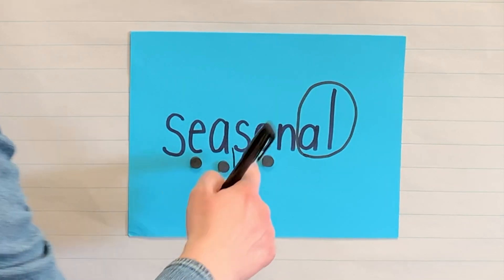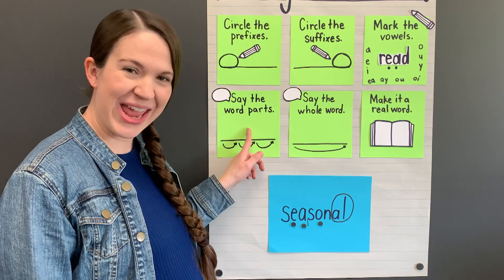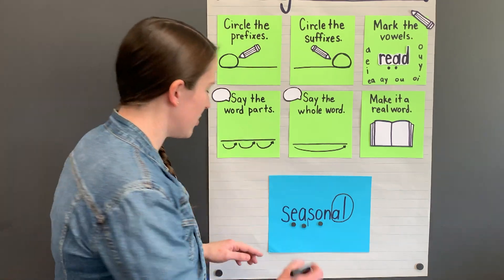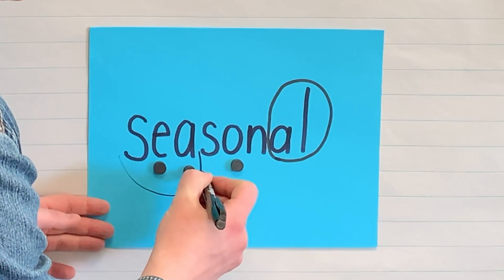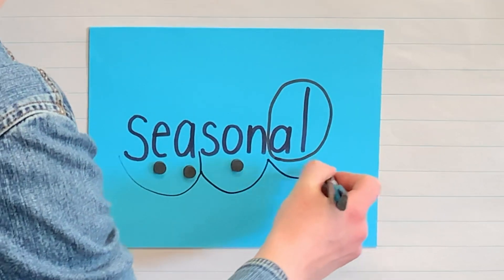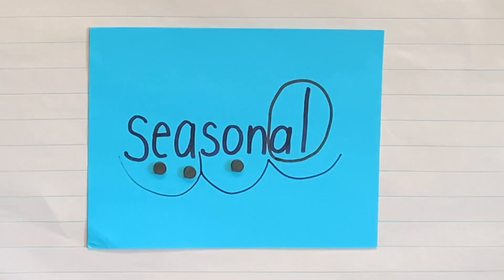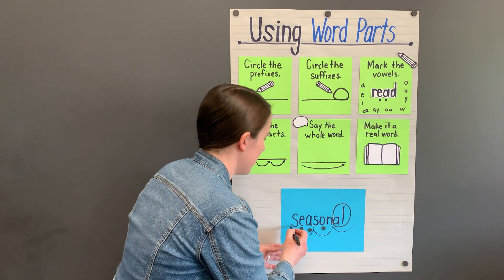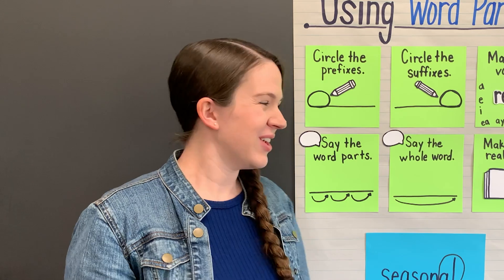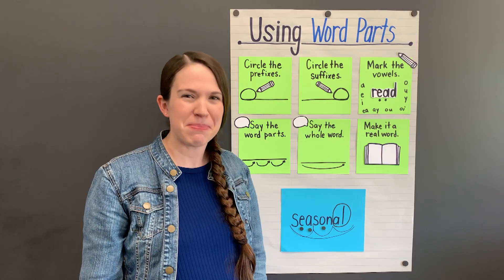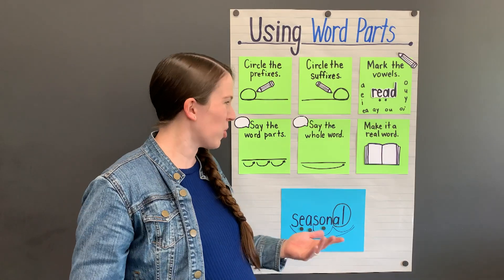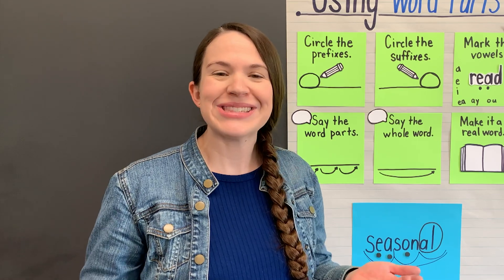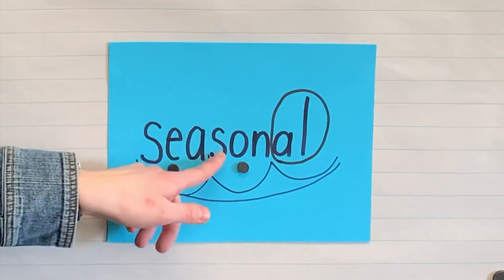Let's split these syllables between the vowel team 'ea' and the 's.' Let's say the word parts: 'sea - son - al.' Now let's say the whole word: 'seasonal.'